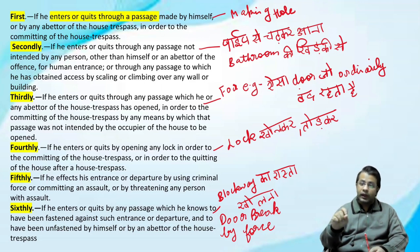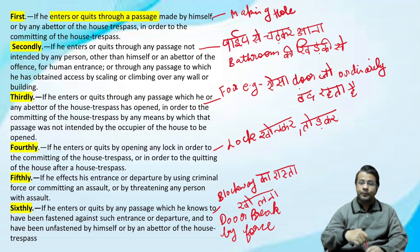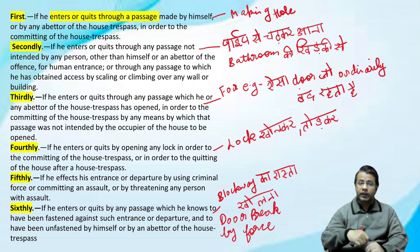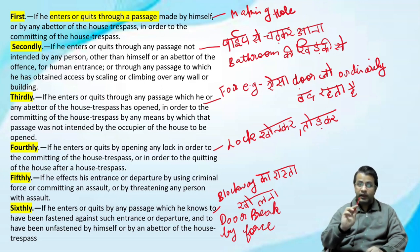बस ऊपर ऊपर से आपको मतलब समझा रहे हैं। Fourth category के बाद — Fifth: if he affects his entrance or departure by using criminal force or committing an assault — मान लो कोई सामने खड़ा हुआ है, रोक रहा है कि मेरे घर में मत आओ, लेकिन force का इस्तेमाल कर के, उसको धकेल कर उसके घर में चले जाते हैं — वो पाँचवाली category। यह सारी house breaking है — कि कैसे अंदर जाएंगे या exit करेंगे, उसी को house breaking कहते हैं।